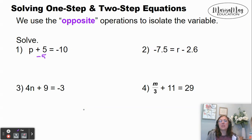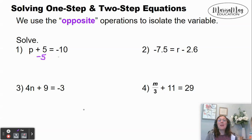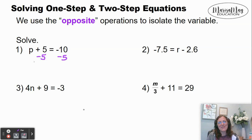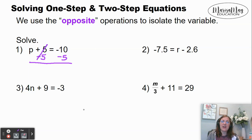I'm going to show you the subtracting 5 on the left side of the equal, but I've also got to do it to the right side of the equal. Whatever I do to one side of the equation, I've got to do the same thing to the other side of the equation. Why do we do that? Because when we have plus 5 minus 5, those are opposites — they cancel each other out, and we're left with just p by itself.